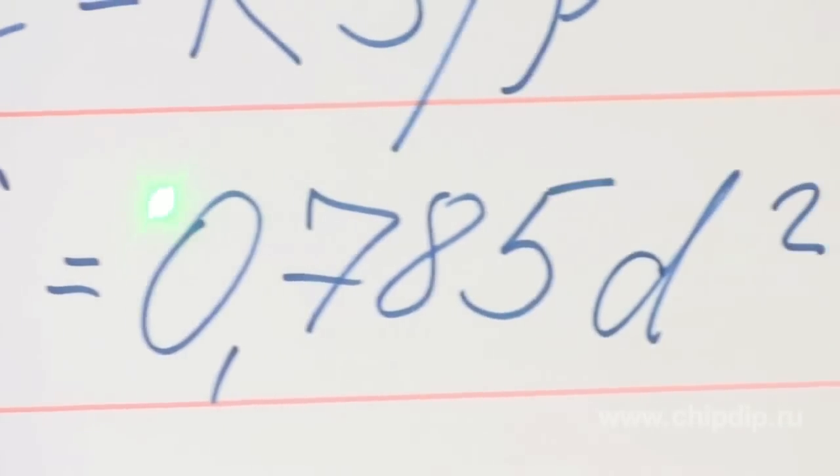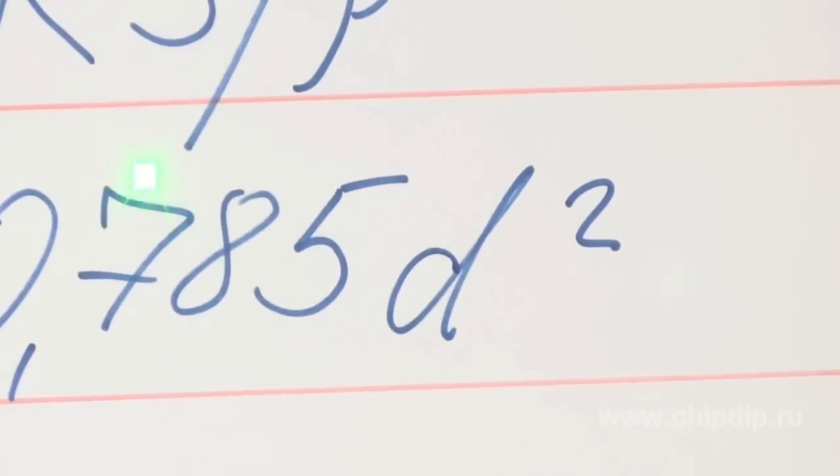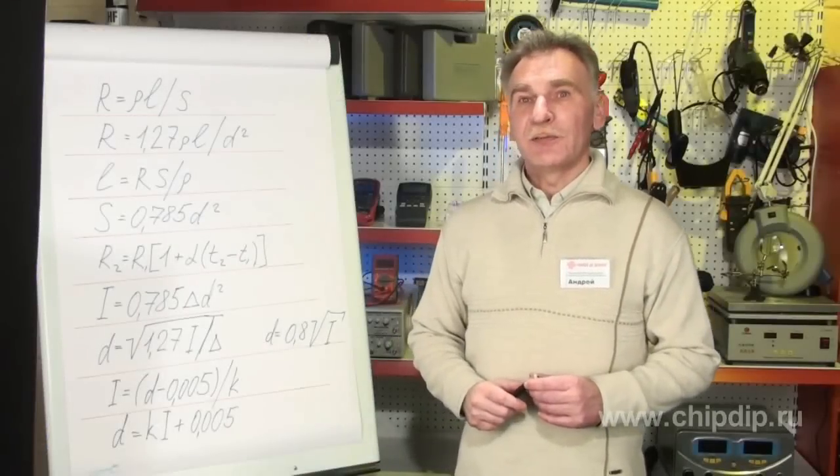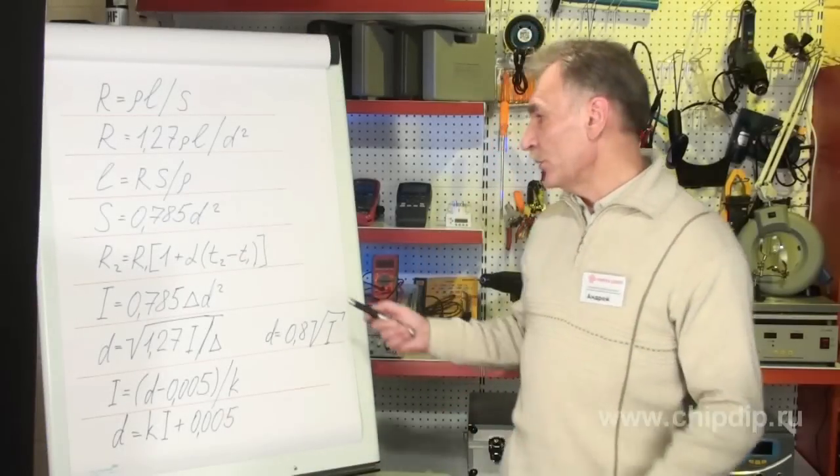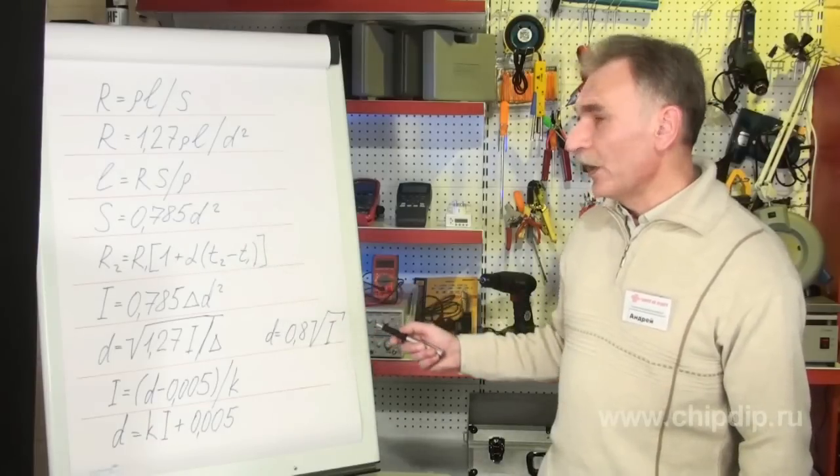We calculate the cable cross-section area using the following formula: S equals 0.785D squared.